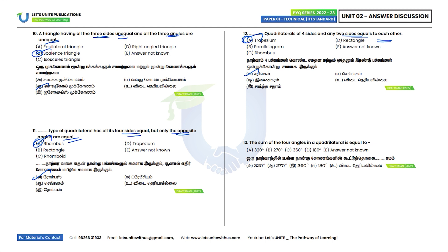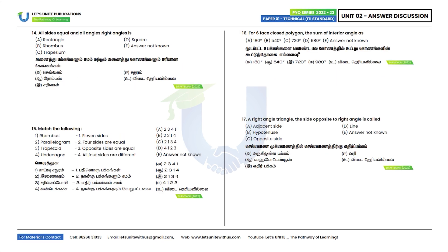Thirteenth question: The sum of all 4 angles in a quadrilateral is equal to 360 degrees. Option C. Fourteenth question: All sides equal and all angles are right angles describes a square. Option B.